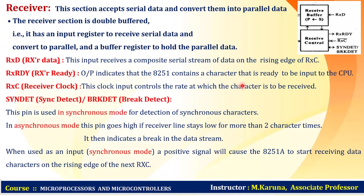The received data signal accepts a serial stream of data on the rising edge of the receiver clock. The receive ready signal indicates to 8251 that serial data contains a character ready to be input to the CPU. The receiver clock controls the rate at which characters are received. The sync detect signal is used in synchronous mode; in asynchronous mode, if the receiver line stays low for more than 2 character times, it indicates a break in the data stream.